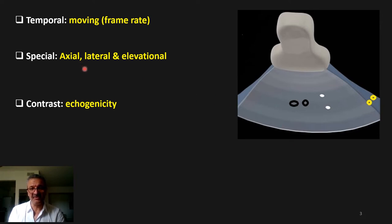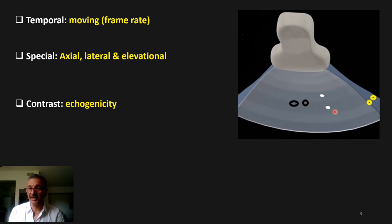To understand these types of resolution, let's look at the probe and sector. The probe sends sound pulses from one side to the other, and in a fraction of a second, thousands of sound pulses travel this way all the way across, creating a sector shape. The sector has a defined thickness at the level of the focus.